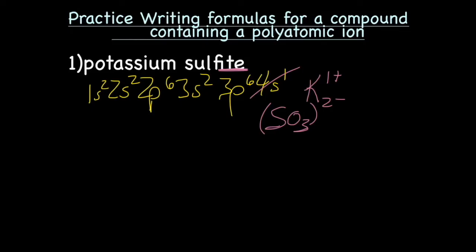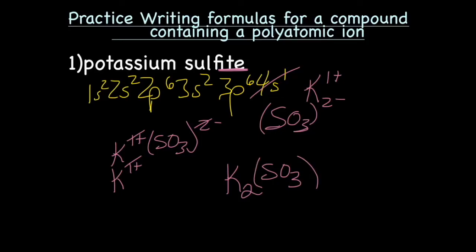Let's try to do this. K1+ SO3 2-. We have 1 plus charge and 2 minus charges. To make these neutral, we're going to need to add another potassium. Charges cancel out. We end up with K2, because we have two of them, SO3. Now you can leave the parentheses on or off, because we didn't need a subscript for the SO3. So the right answer could be K2SO3, or if you like, K2(SO3).